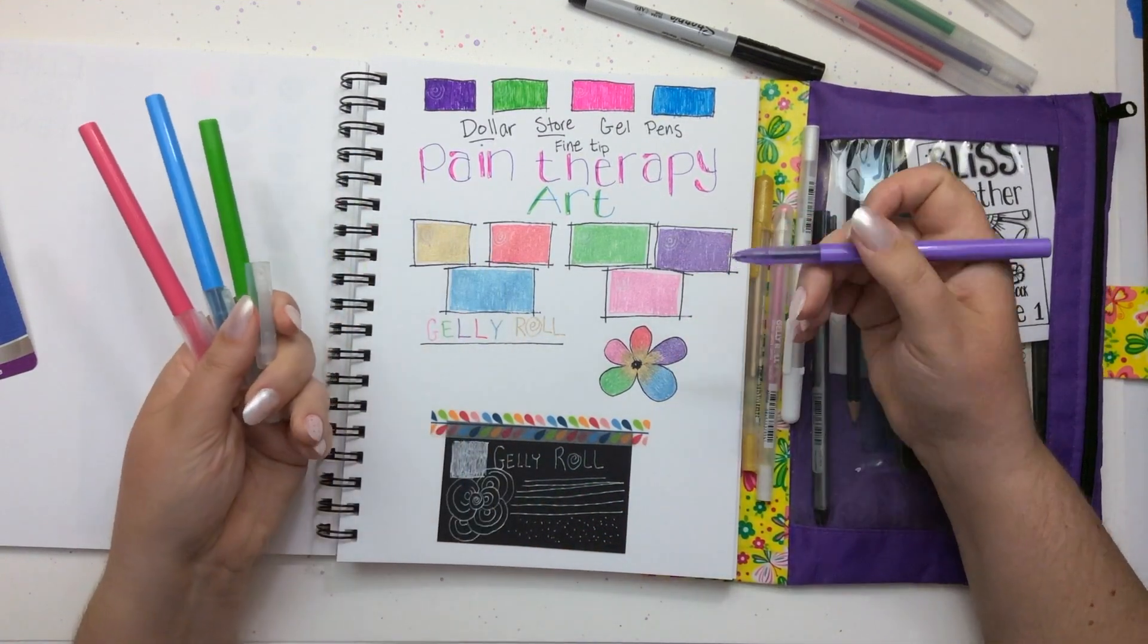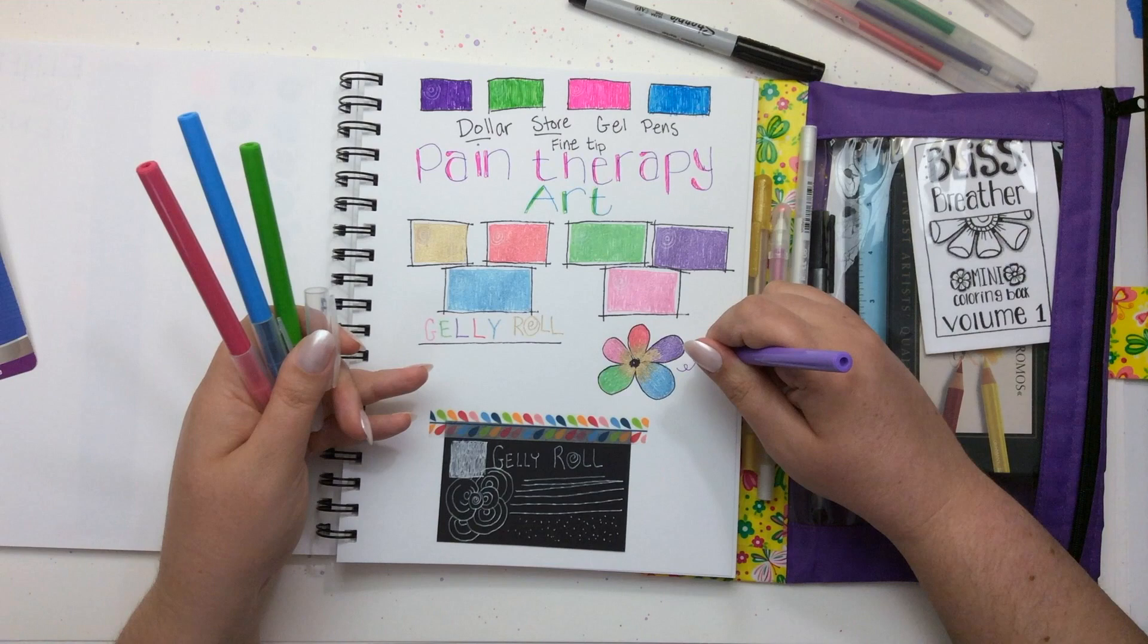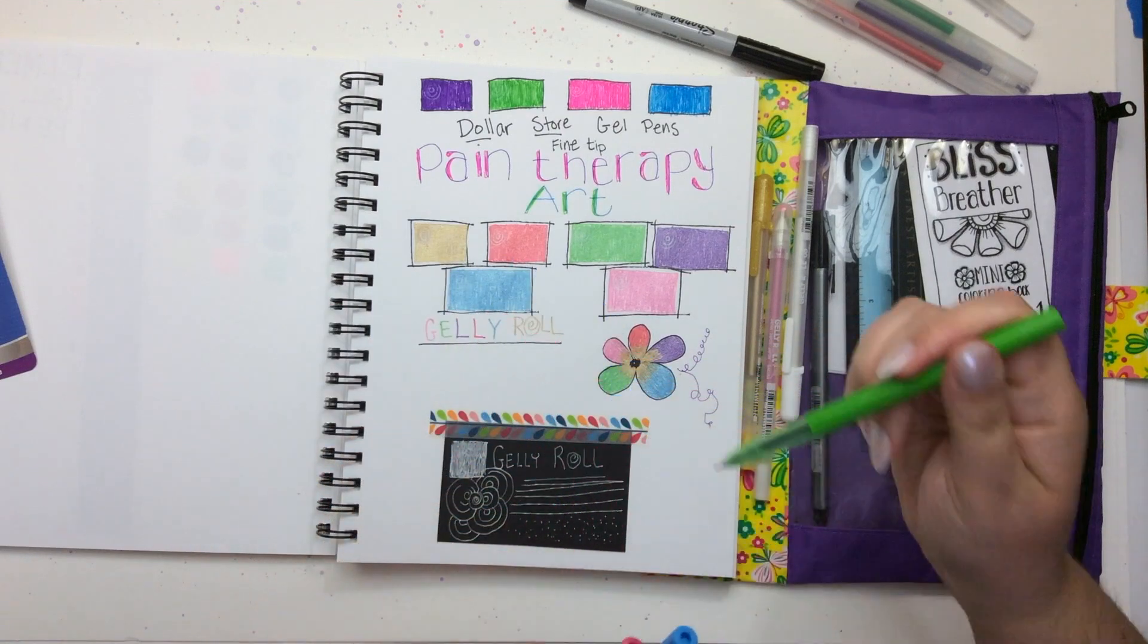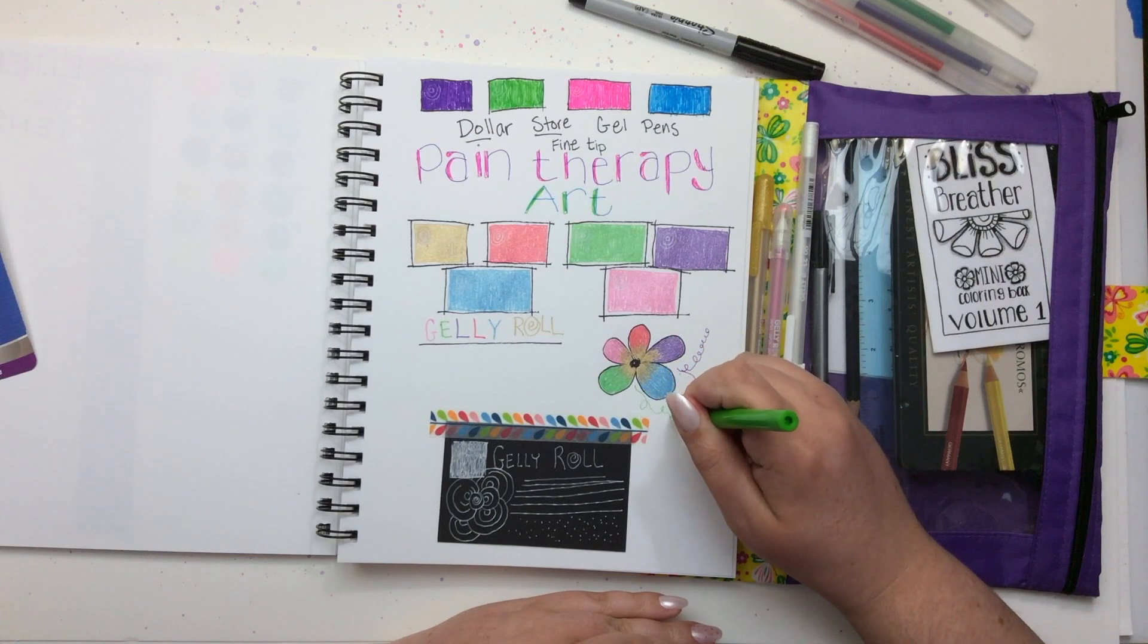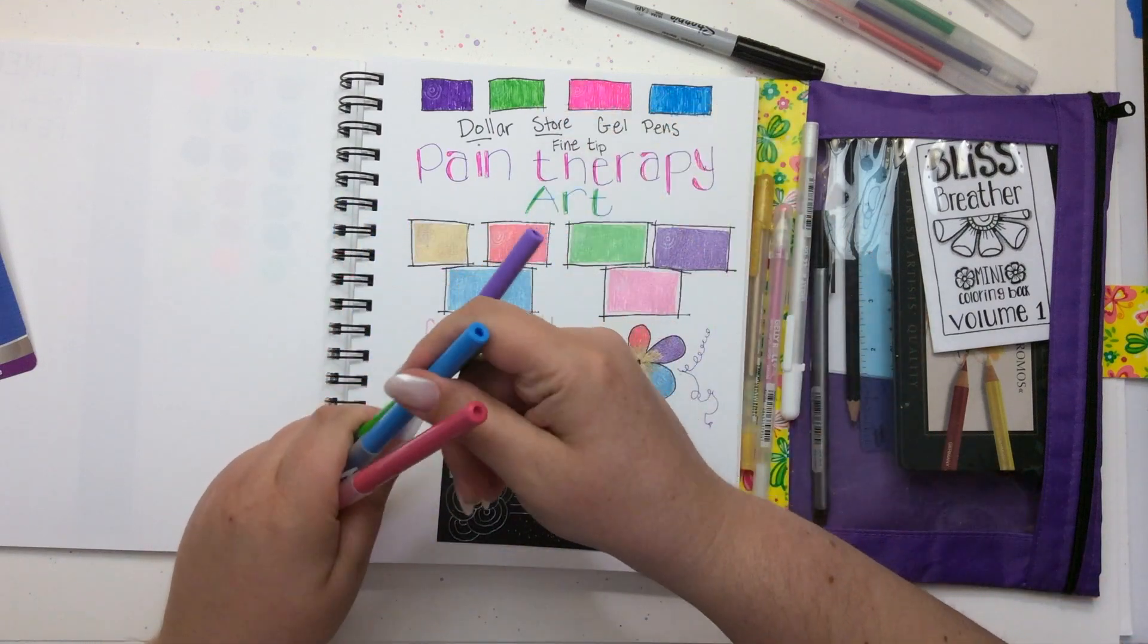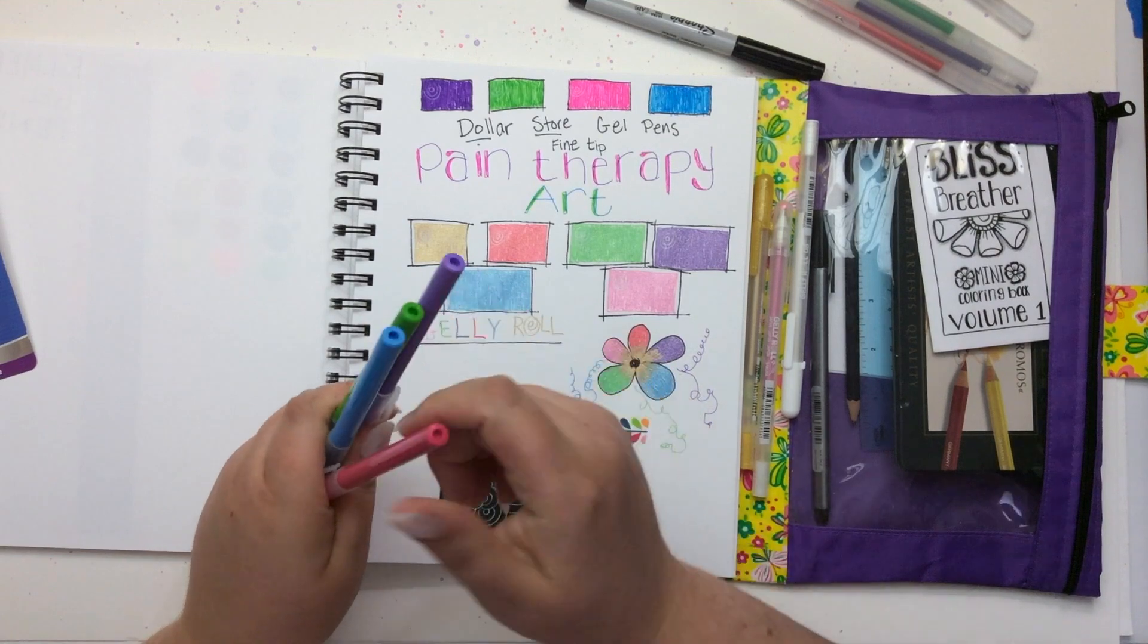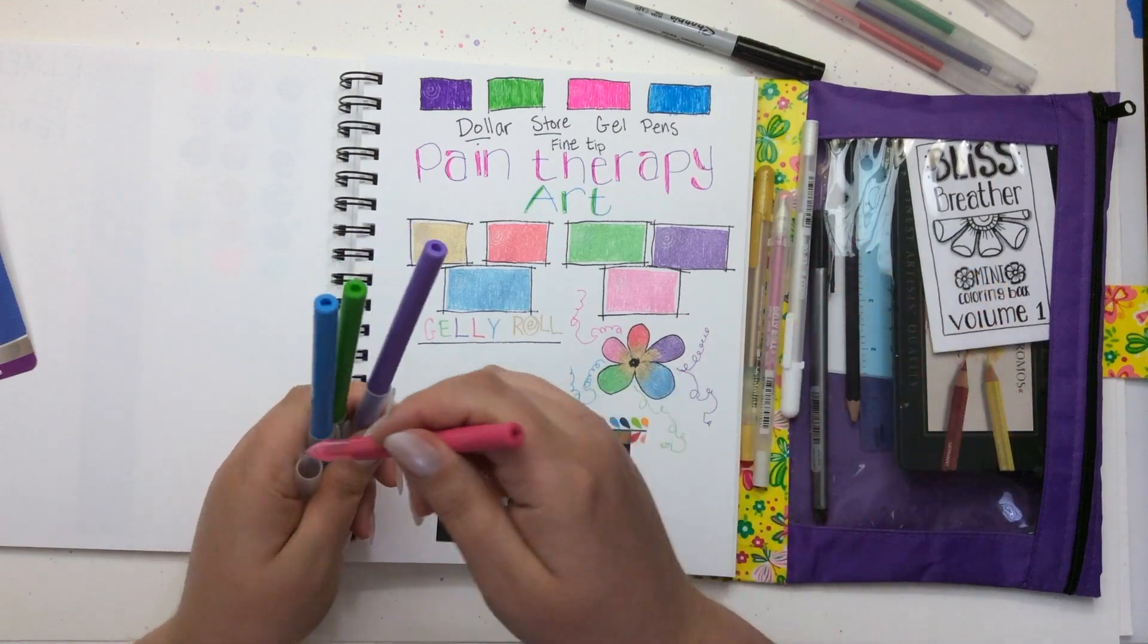The dollar store pens turned out about what I expected because they're fine tip. They're going to be really great for adding flourishes and little details, but they're not going to be great for coloring because of how much back and forth you have to do to get them to do anything. But they laid down pretty good color. I had to tap them a few times to get them to go, but not bad. They're doing pretty good here. They'll be good for writing notes.